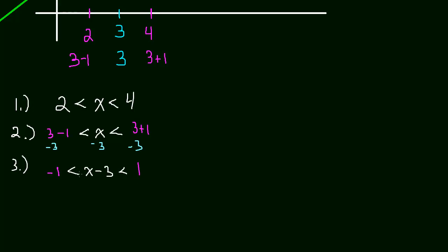This is still the same interval — we just rewrote it with a little algebra. Then in step 4, we write this as an absolute value: the absolute value of x minus 3 is less than 1. Hopefully you remember doing that from Algebra 1, and you may have seen it again in Algebra 2 or pre-calculus. Let's just test this and make sure it really gives us the right interval.